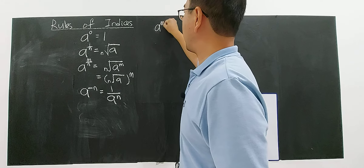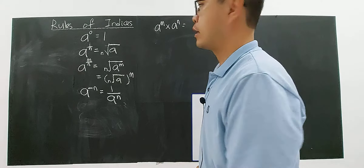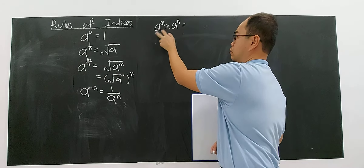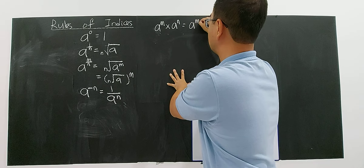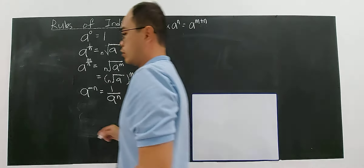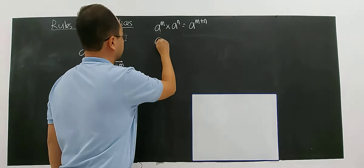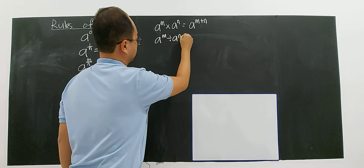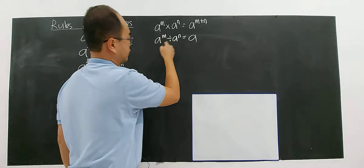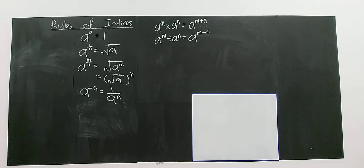If you have A to the power of M multiplied by A to the power of N — with the same base — you can add up the indices to get A to the power of M plus N. If you divide A to the power of M by A to the power of N, and they have the same base, you subtract the indices: you get A to the power of M minus N.